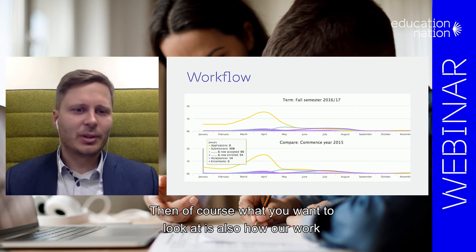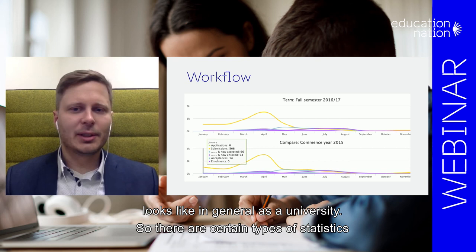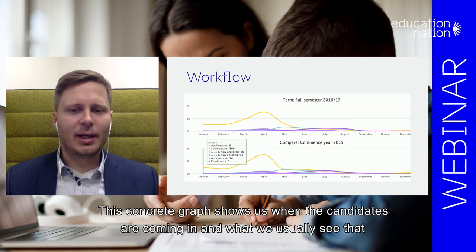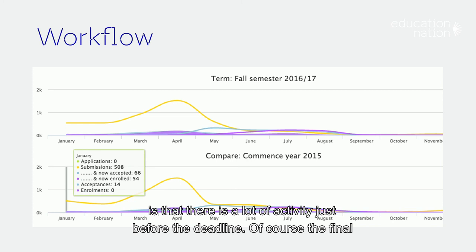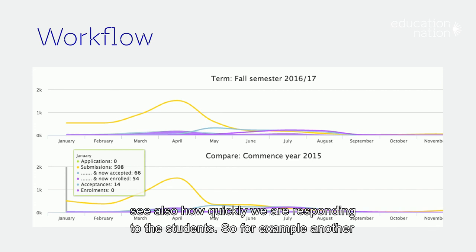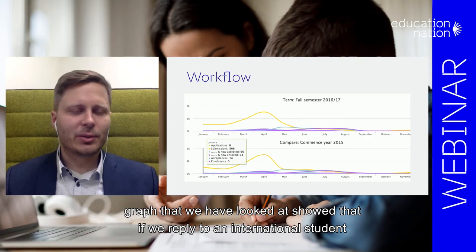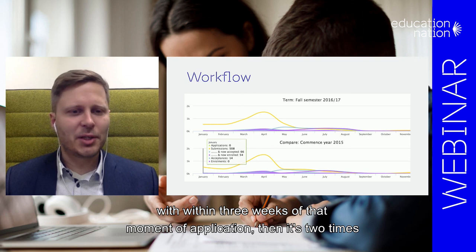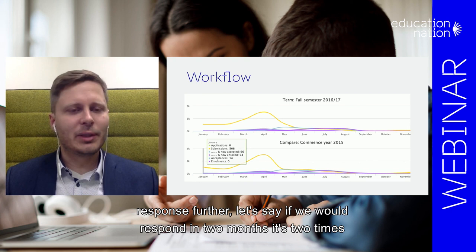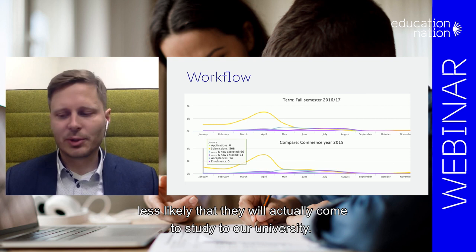You also want to look at how your work looks in general as a university. There are types of statistics very useful for planning university work better. One graph shows when candidates are coming in — we typically see a lot of activity just before the deadline, with the final hours being the most popular. We can also see how quickly we are responding to students. Data shows that if we reply to an international student within three weeks of application, it is twice as likely they will come to study at our university. If we delay to two months, it is twice as unlikely.